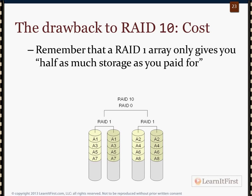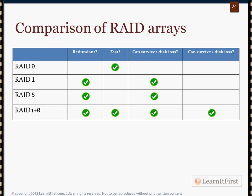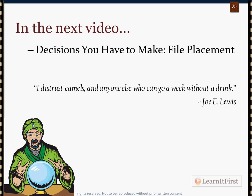The main drawback to RAID 10 is cost — since RAID 1 arrays only give you half the storage you paid for, you're effectively doubling up on disks, making it more expensive. RAID 10 gives you 50% capacity. Overall, RAID 10 wins on being redundant and fast, and able to survive multiple disk losses. For a medium-to-large production system you'll likely use RAID 10 for your data files, or possibly a storage area network, which we'll cover in chapter 12.